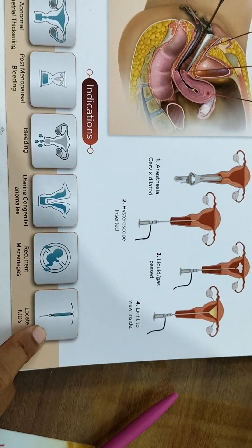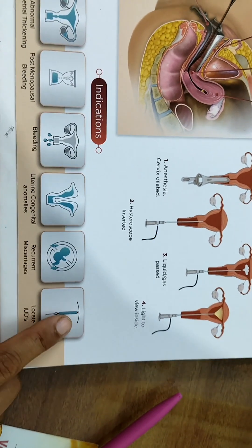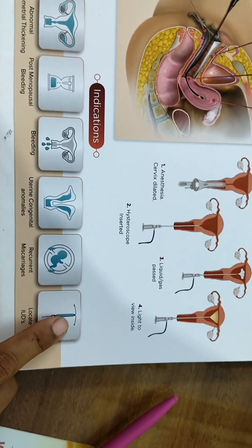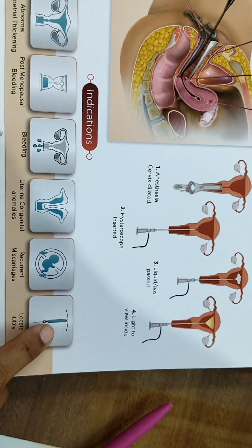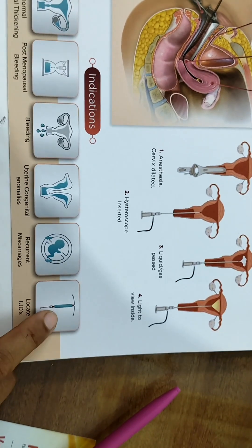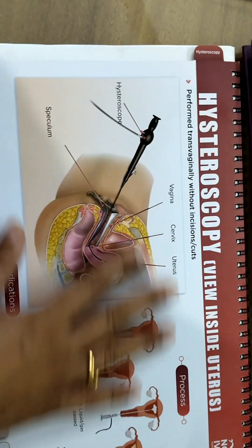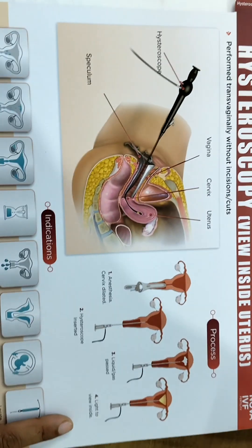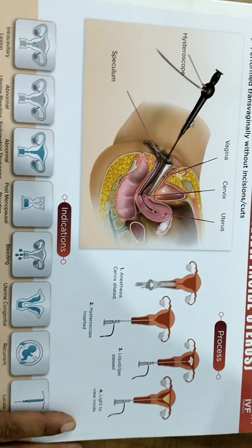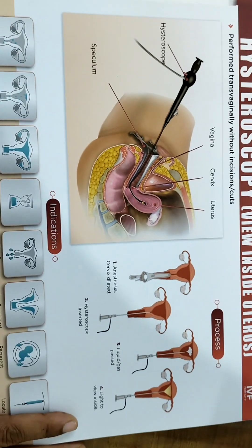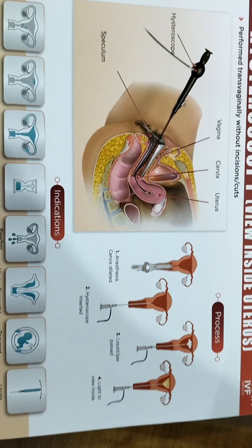Recently, we had a very interesting case in which the patient had two misplaced IUCDs — I have a video of that which I will share in the link. This is an overall view and understanding of hysteroscopy. Any doubts can be put in the comment section and we will be happy to guide you. Thank you.